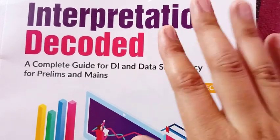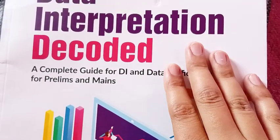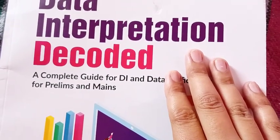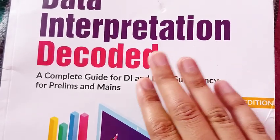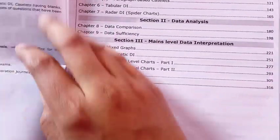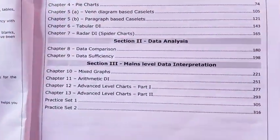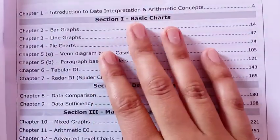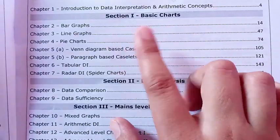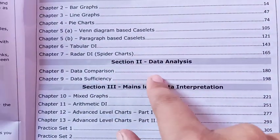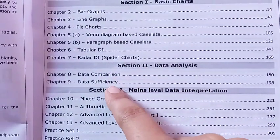It covers each examination, so we're going to open this book and see if it matches the level. Here they have given the table of contents: bar graphs, so these are chart-wise DIs, and then data analysis, data comparison, and data sufficiency.